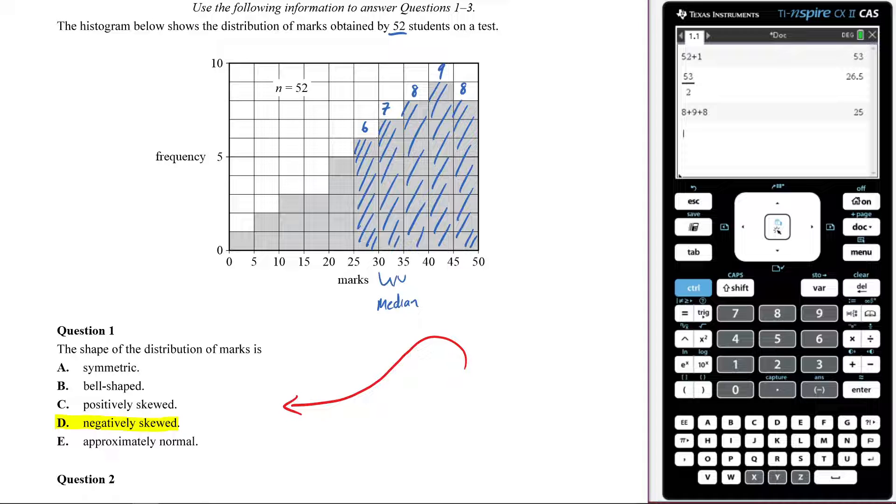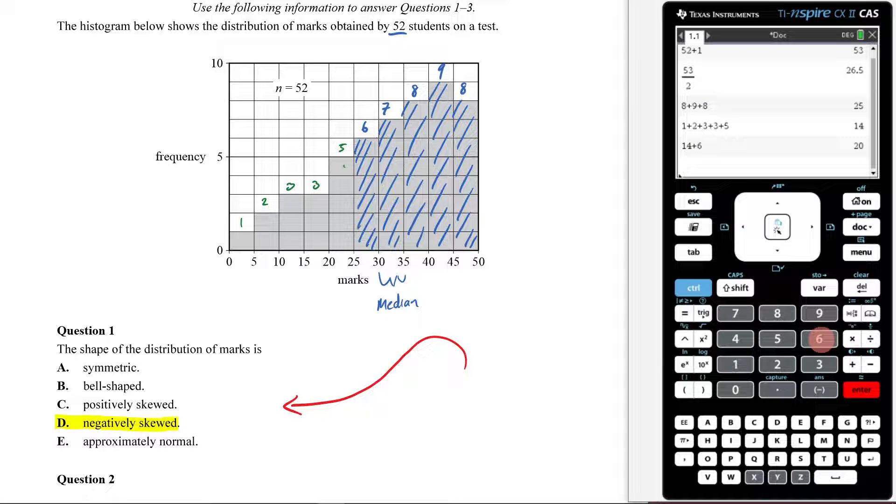You could also count forward. If I count forward, there's 1, there's 2, there's 3, there's 3, there's 5. Then you'd count up 1 plus 2 plus 3 plus 3 plus 5, which is 14. Plus the next column, which is plus 6, gets me to 20. Not quite. If I plus on an extra 7, I get to that 26.5. And as we said, between 30 and 35.